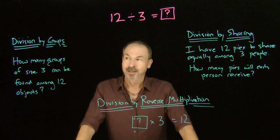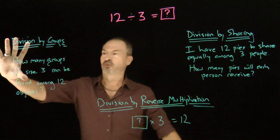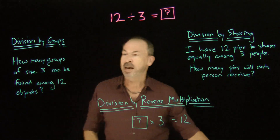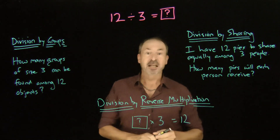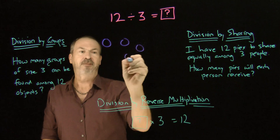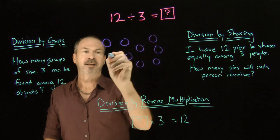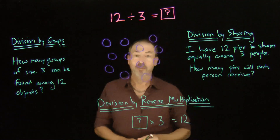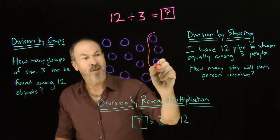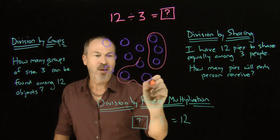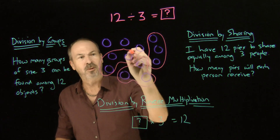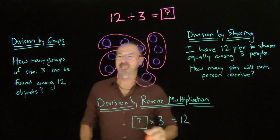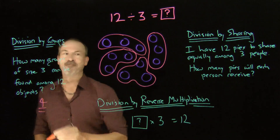Let's go with division by groups first. If I really had to answer this question with a group mentality — how many groups of 3 can I find amongst 12 objects — I'd look at 12 objects and literally try to find groups of 3. There's one group, there's another, there's another group of 3, and a group of 3 here. All 12 dots are used up, and I can see there are 4 groups of 3 amongst those 12 dots.